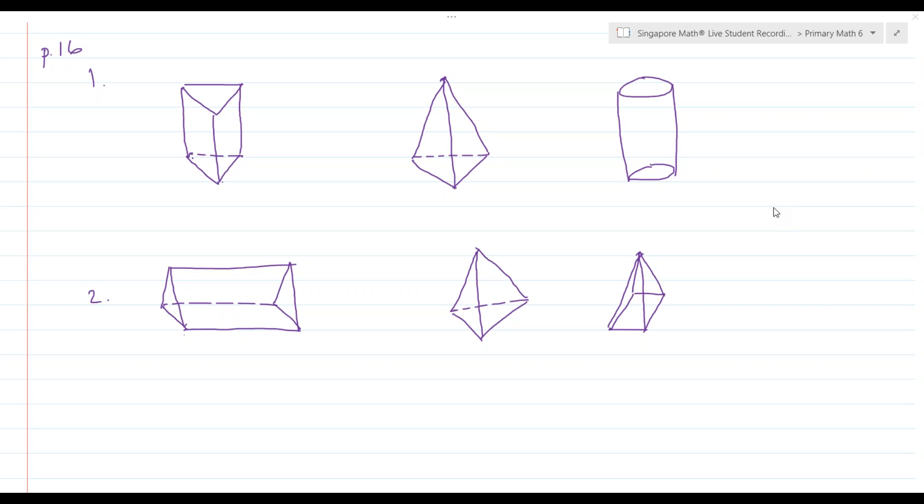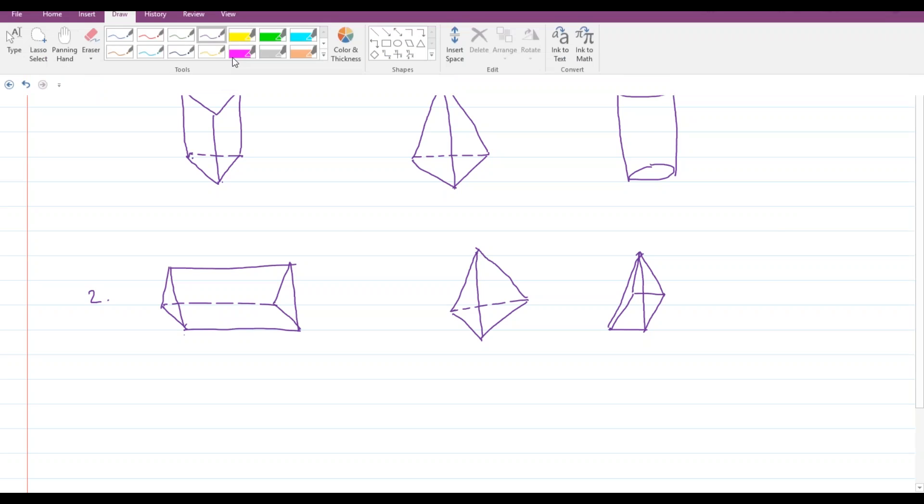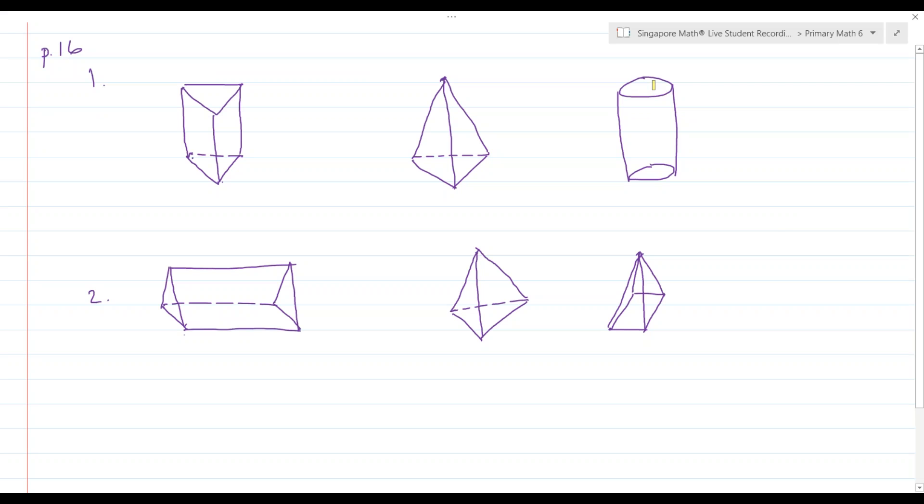On page 16 we're just doing some very basic thoughts about 3D graphs. Number one simply says the figures below show some solids. Which one has a curved surface? Well that's about the most obvious question we'll ask in primary math 6.